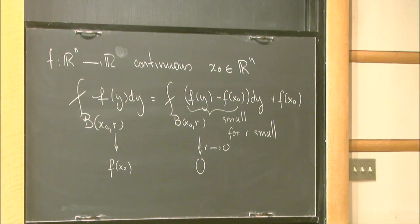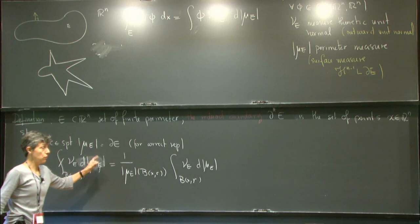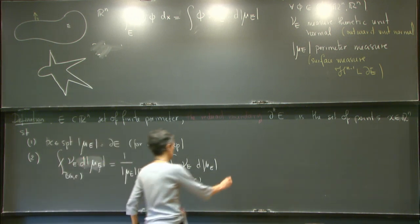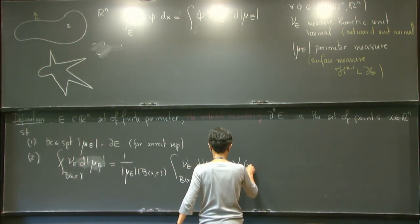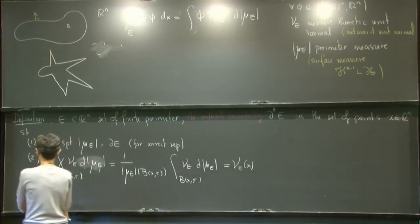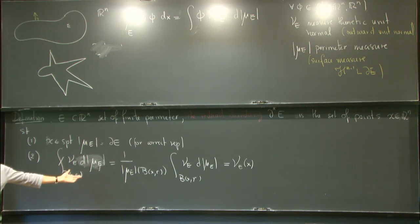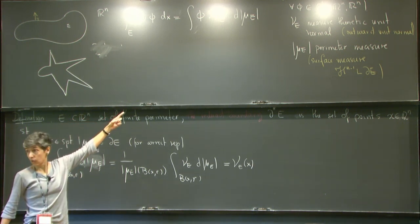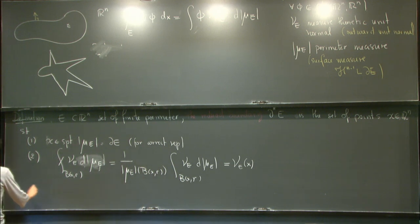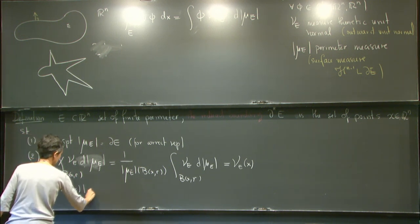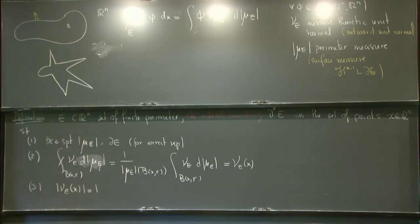The reduced boundary only picks up points where the average of ν_E converges to a specific value ν_E(x). This corresponds to picking up the Lebesgue points of ν_E. The third condition is that I only care about points where |ν_E(x)| = 1. This reduces the set further — the limit as r → 0 of the average of ν_E over B(x,r) with respect to μ_E equals ν_E(x), and we require |ν_E(x)| = 1.